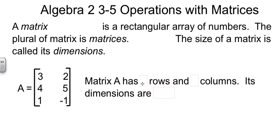Matrix A here has three rows. One, two, three. And it has two columns, one and two. So then we would say the dimensions are three by two. It's always rows first, columns last.